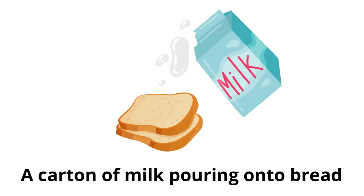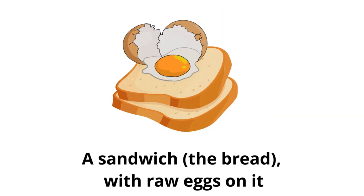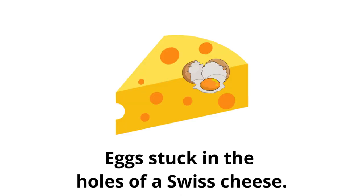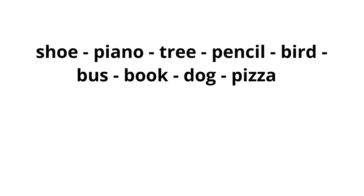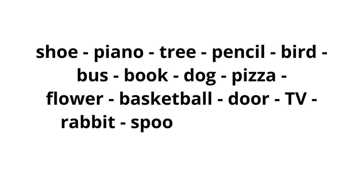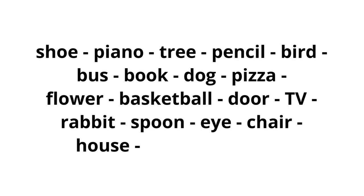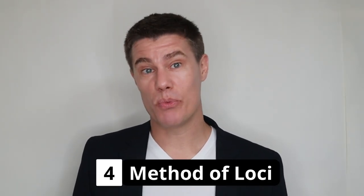A carton of milk pouring onto bread. A sandwich with raw eggs on it. Eggs stuck in the holes of Swiss cheese. Pieces of cheese hanging from an orange tree. Practice chaining with your students. Read the next word slowly and challenge your learners to remember by imagining them being chained together somehow. Once done, ask if any of the students can recall all the items.